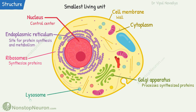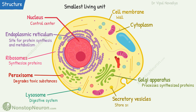Lysosomes are the digestive systems of the cell — they digest damaged cellular structures, food that the cell has ingested, and unwanted things like bacteria. Peroxisomes degrade toxic substances. Secretory vesicles store secretory proteins. Mitochondria are the powerhouses — they extract energy from nutrients and supply it in the form of ATP.